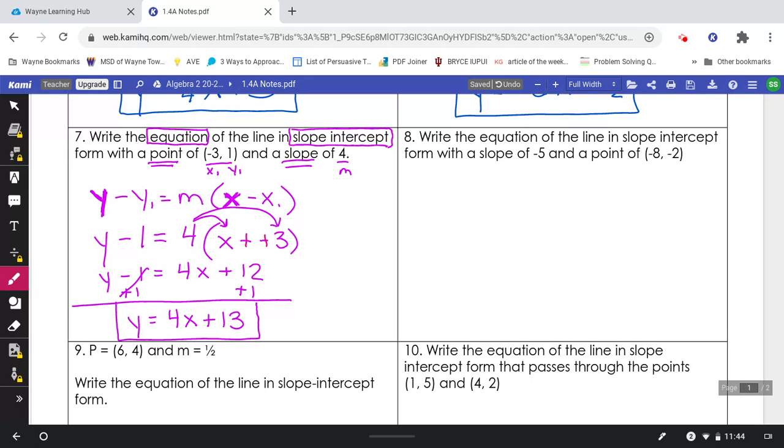Problem number 8. A very similar process. So again you have your slope of negative 5 and a point of negative 8, negative 2. See if you can set the equation up, putting them in the right places. m and x1, y1.